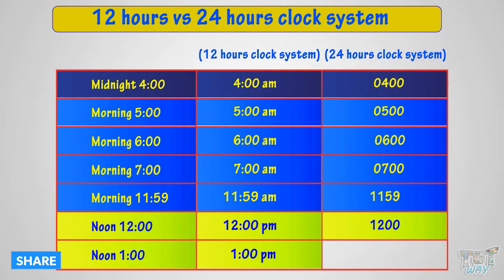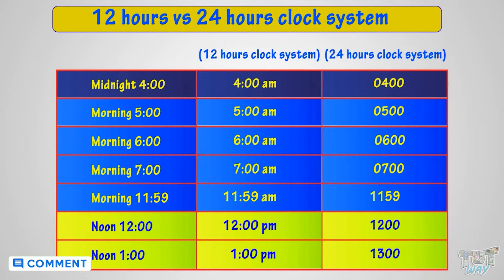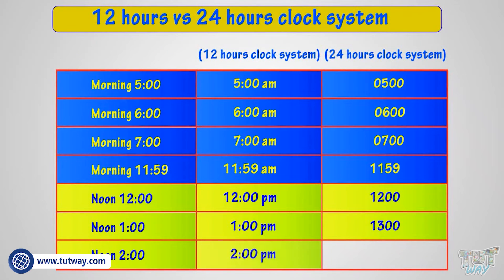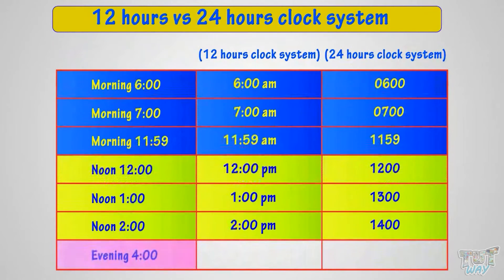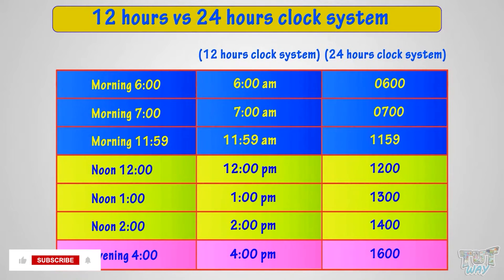1 in the afternoon is called 1 p.m. in the 12-hour clock system, and 1300 — that is 1300 hours — in the 24-hour clock system. 2 in the afternoon is called 2 p.m. in the 12-hour clock system, and 1400 — that is 1400 hours — in the 24-hour clock system. 4 in the evening is called 4 p.m. in the 12-hour clock system, and 1600 — that is 1600 hours — in the 24-hour clock system.